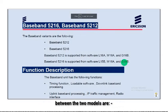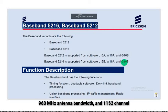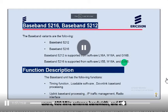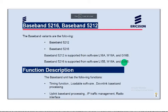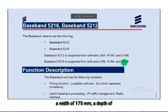Baseband 5216 has higher capacity than Baseband 5212: supports up to 8,000 connected users, 960 MHz antenna bandwidth, and 1152 channel elements for LTE. Baseband 5212 supports up to 2,000 connected users, 480 MHz antenna bandwidth, and 576 channel elements for LTE. Baseband 5216 is larger: height 31 mm, width 350 mm, depth 280 mm, weight 4 kg. Baseband 5212: height 31 mm, width 175 mm, depth 280 mm, weight 2 kg.